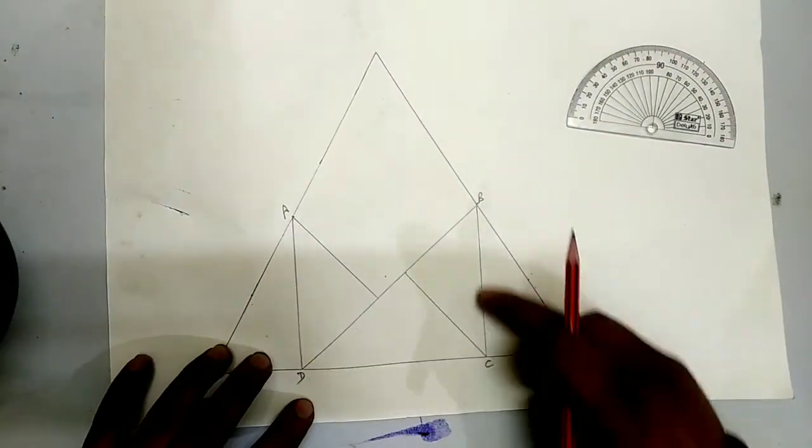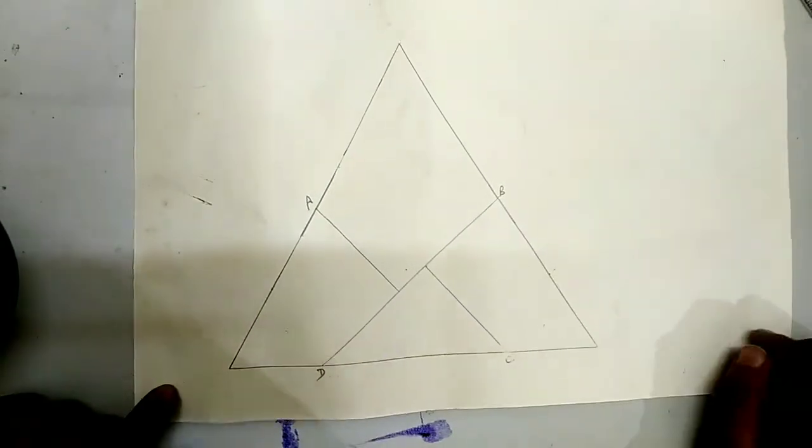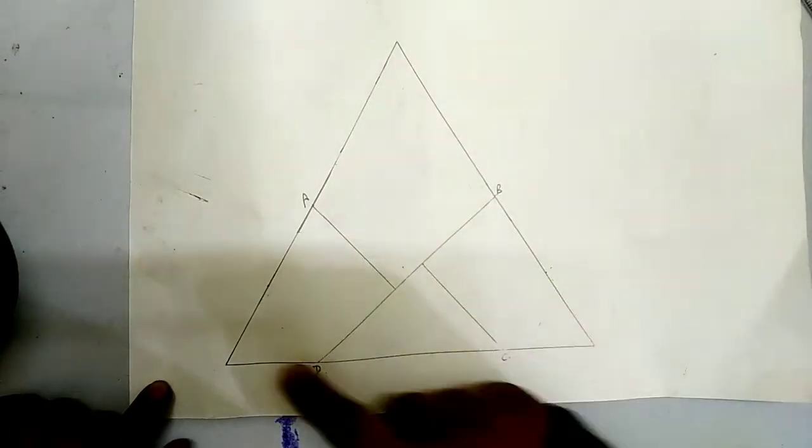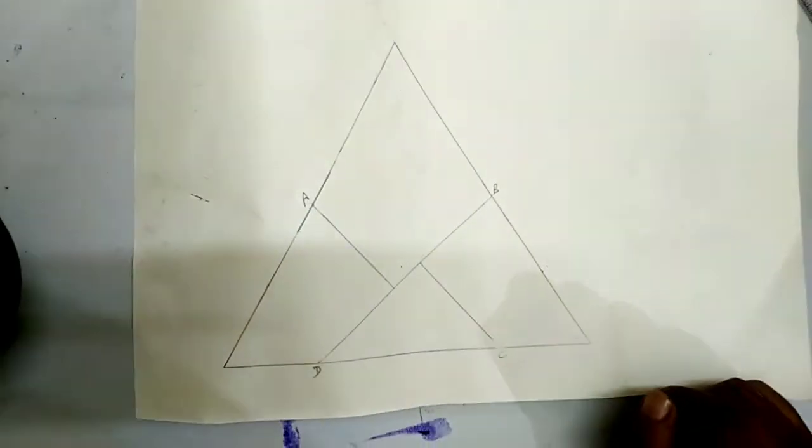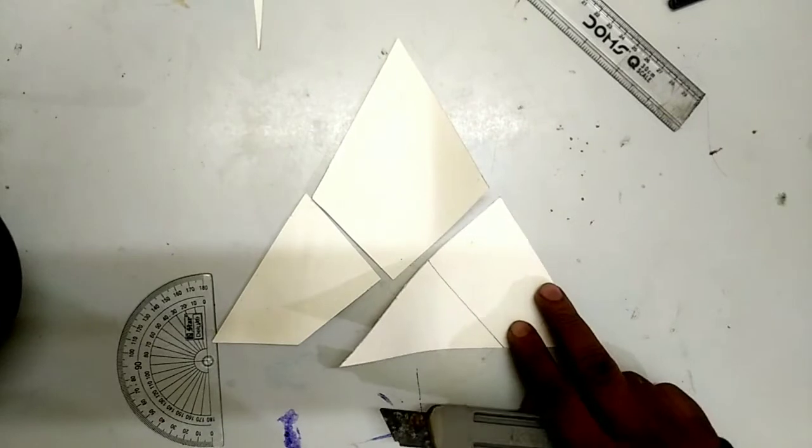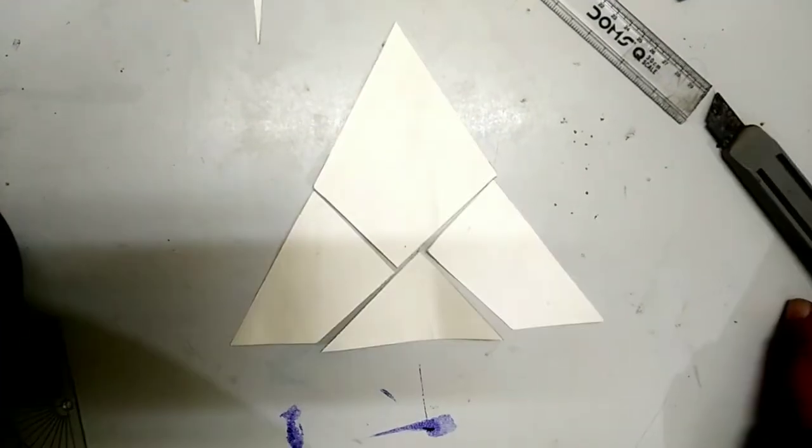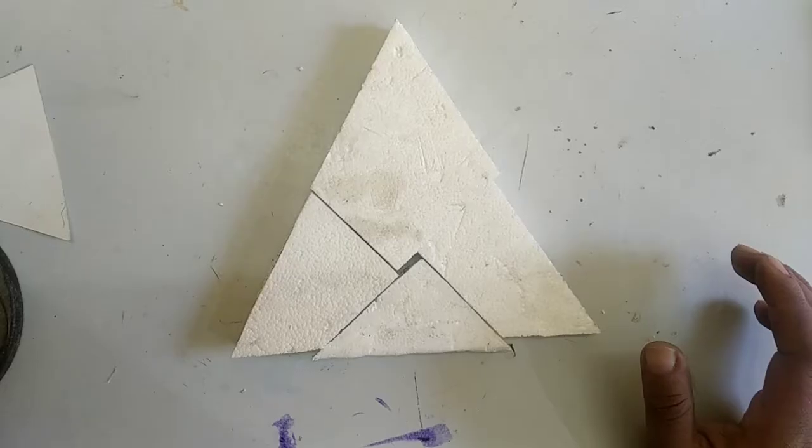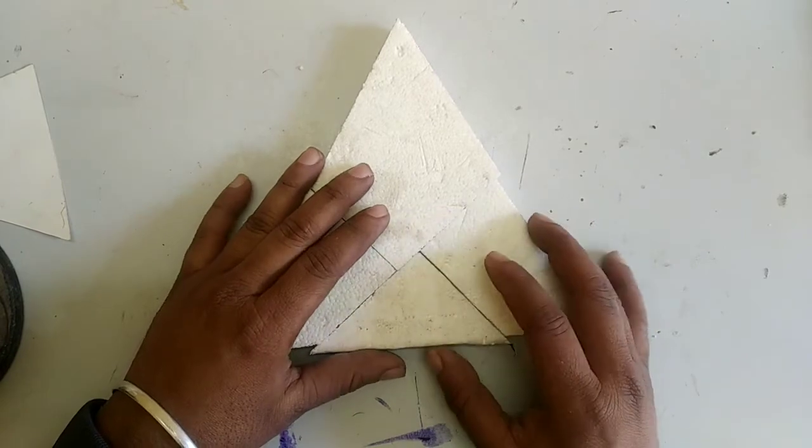We will erase the AD and BC lines and cut out the triangle. We have cut the triangle in the shape of thermocole.